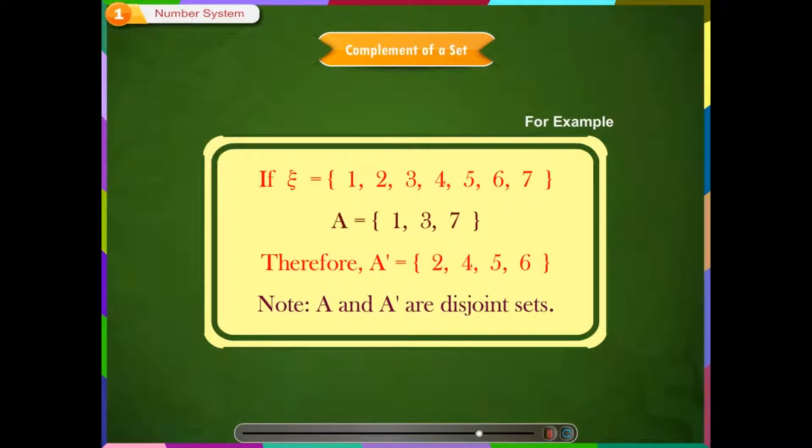Therefore, complement of A is equal to 2, 4, 5, 6. We observe that 2, 4, 5, 6 are the only elements of ξ which do not belong to A.